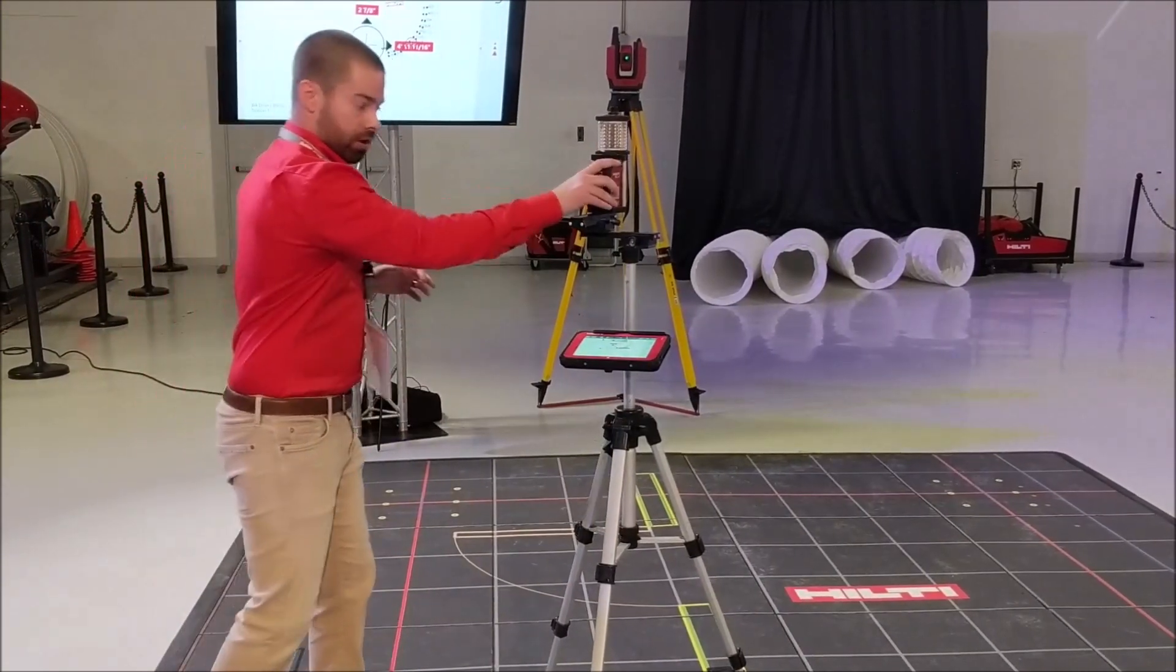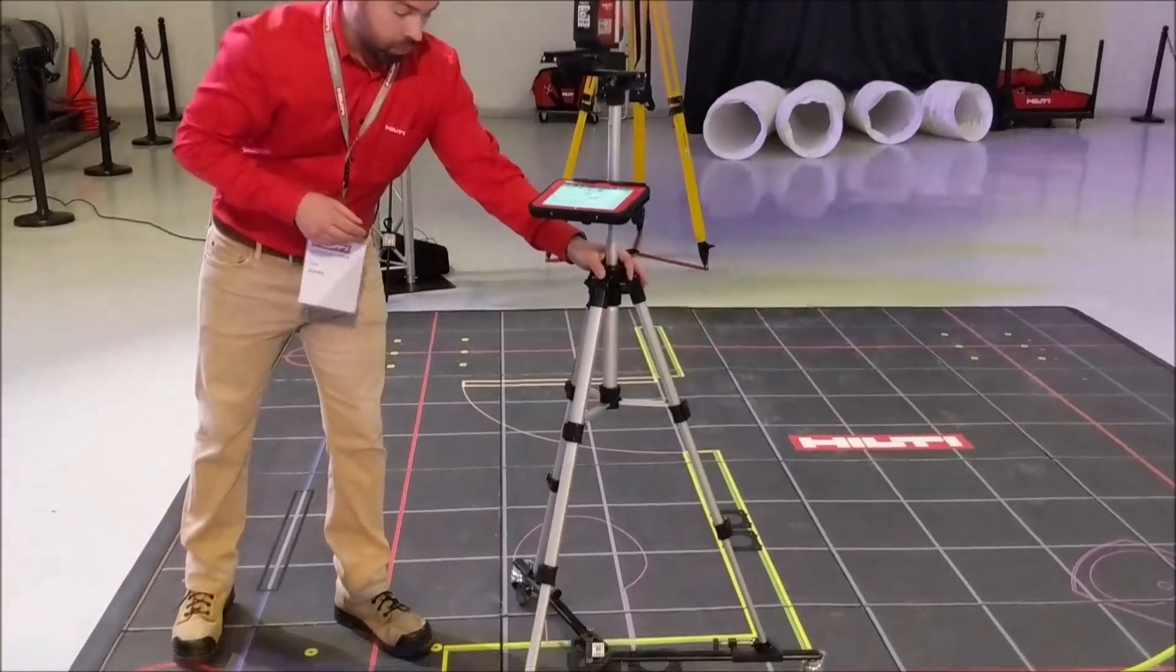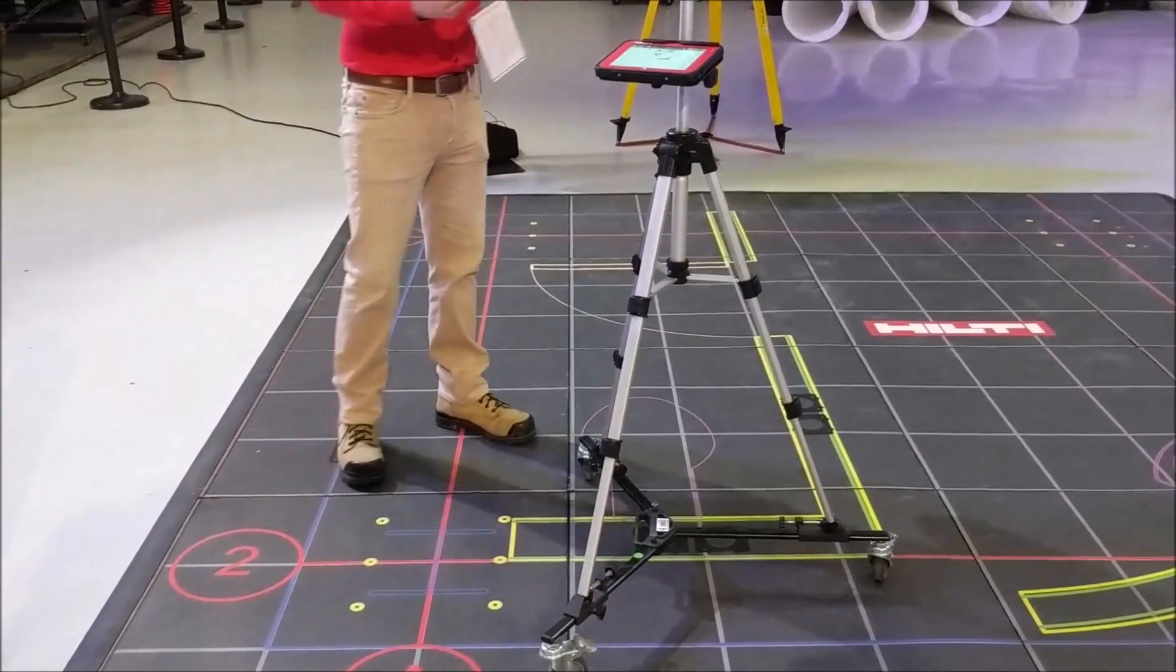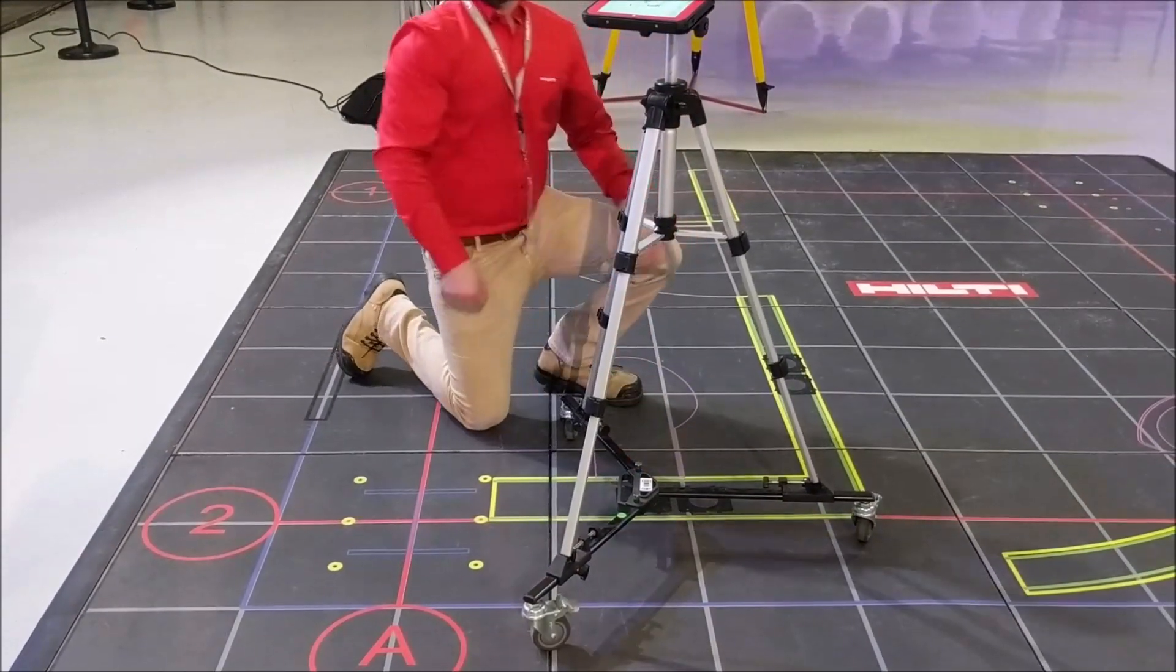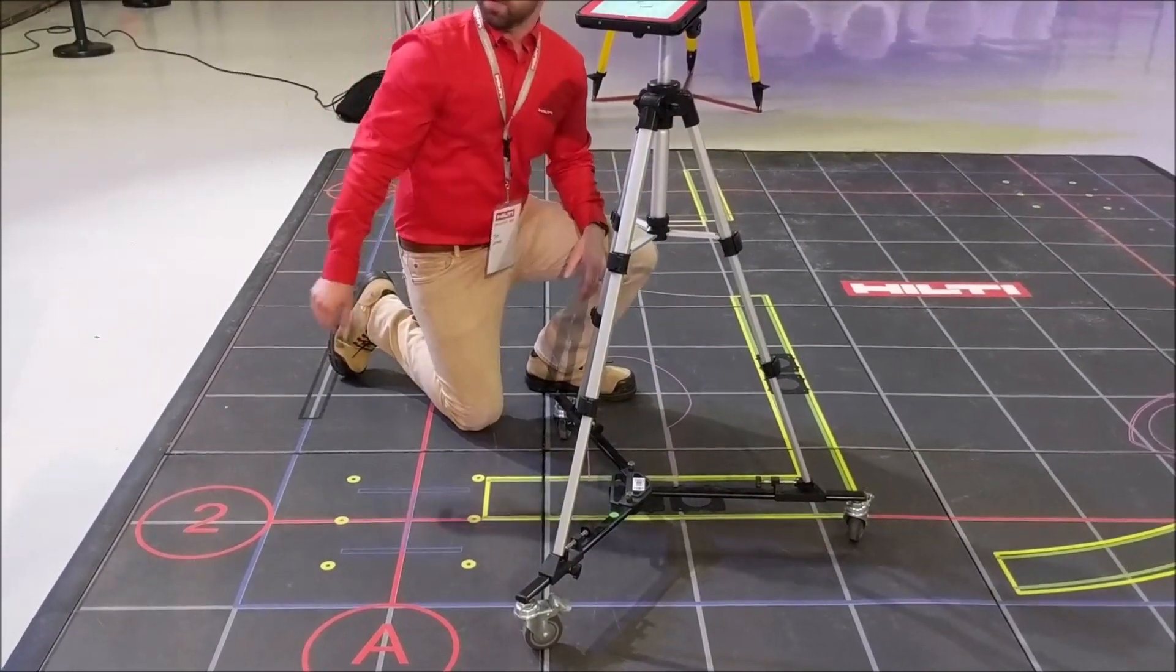Then all you would do is turn on your point laser like so, get over top of the point that you're trying to lay out. Once you're within the tolerance that you want to achieve, that's where you would mark the point out, write down what it is, and stake that point.